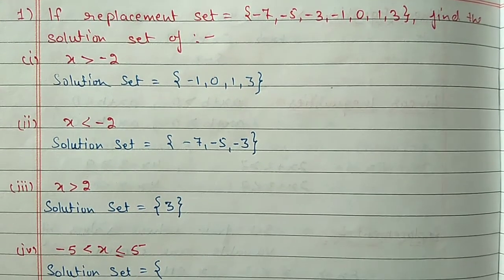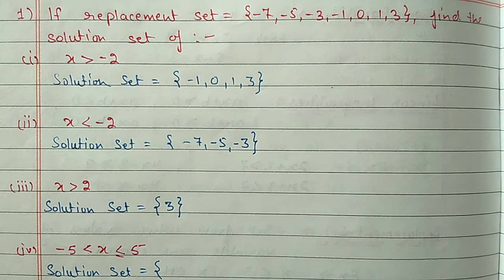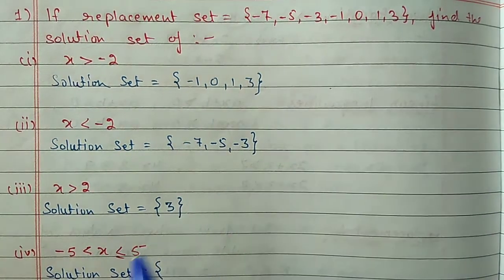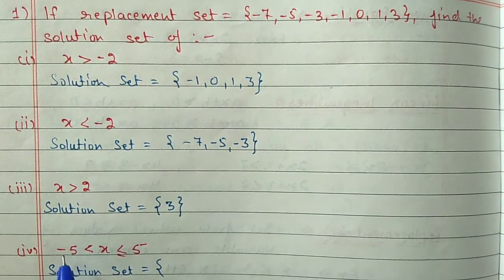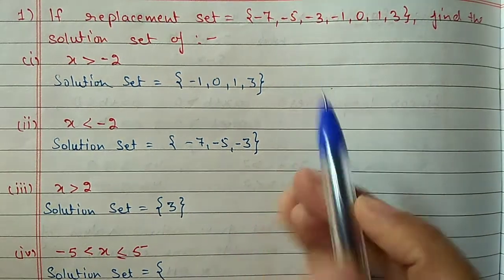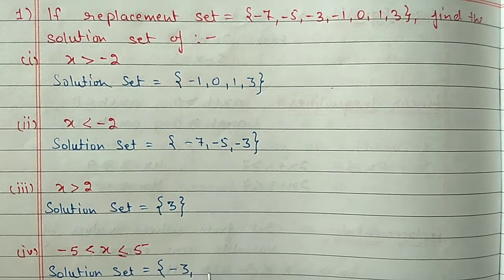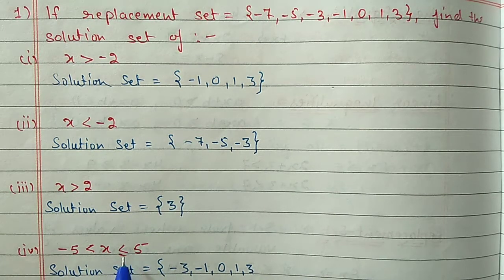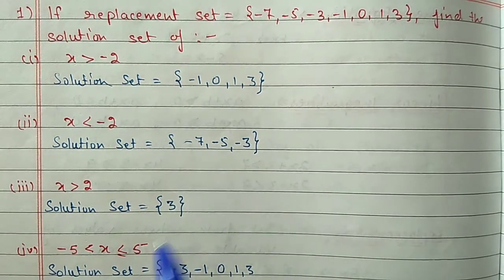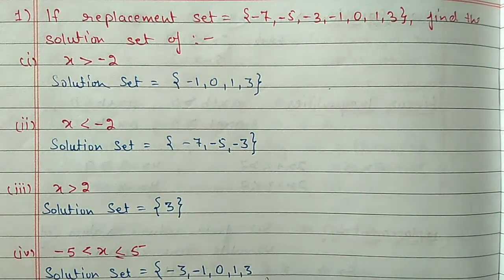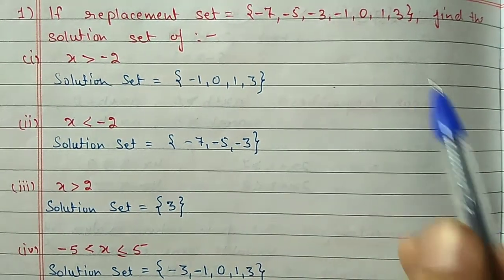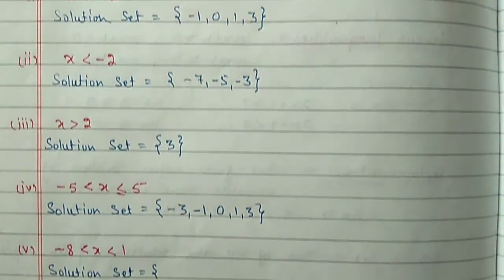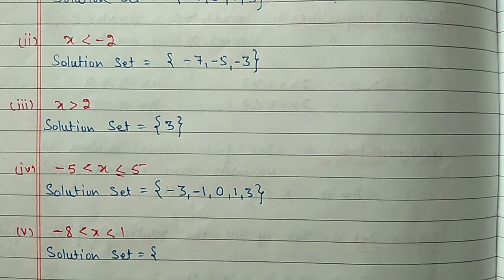Fourth part: x greater than minus 5 but less than or equal to 5. Greater than minus 5 means we start after minus 5, not including it, so next is minus 3, then minus 1, 0, 1, and 3. Less than or equal to 5 would include 5, but 5 is not in our replacement set, so we go up to 3. Solution set is {-3, -1, 0, 1, 3}.